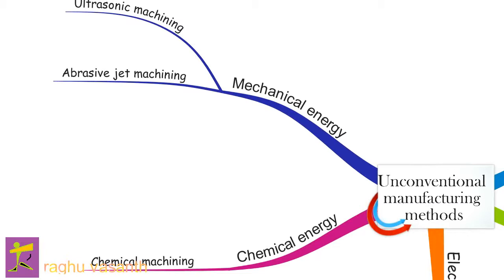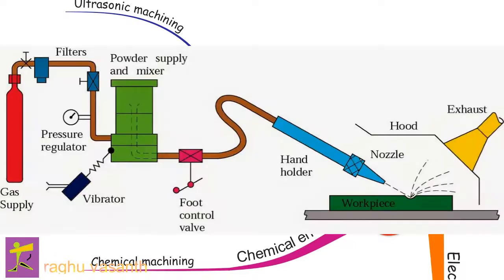Abrasive jet machining, AJM, also known as abrasive micro-blasting, pencil blasting, and micro-abrasive blasting, is an abrasive blasting machining process that uses abrasives propelled by a high-velocity gas to erode material from the workpiece. Common uses include cutting heat-sensitive, brittle, thin, or hard materials. Specifically it is used to cut intricate shapes or form specific edge shapes.